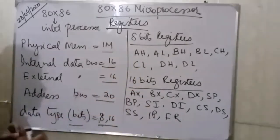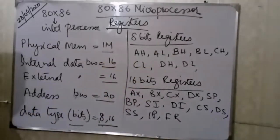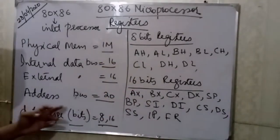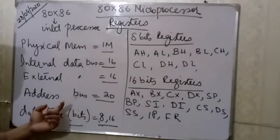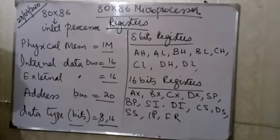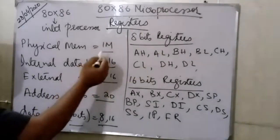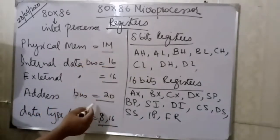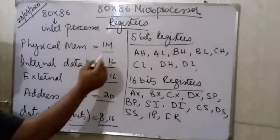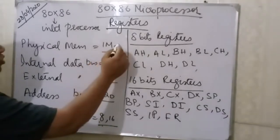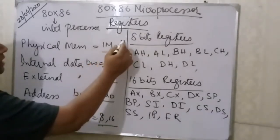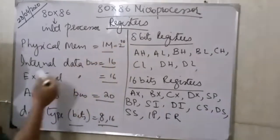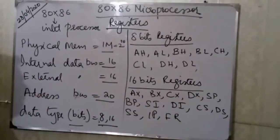If I say 20 bits, that defines 1 megabyte. Because 2 to the power of 20 equals 1 mega — that is 1 megabyte of physical memory addressable by the 8086.